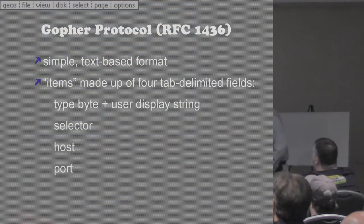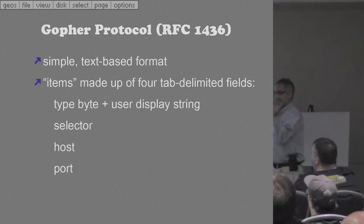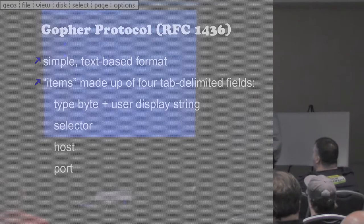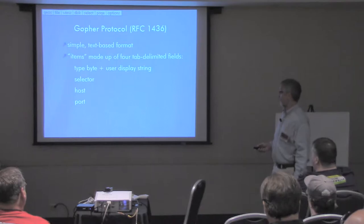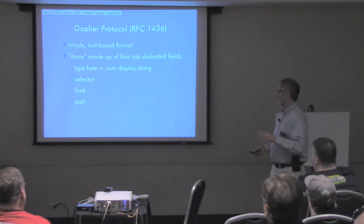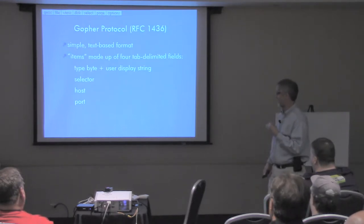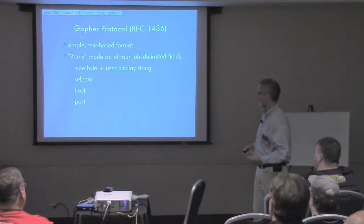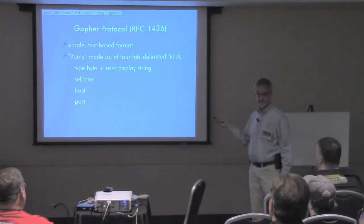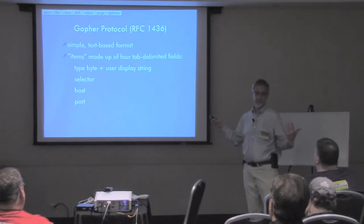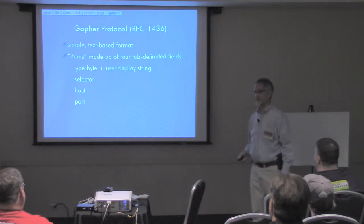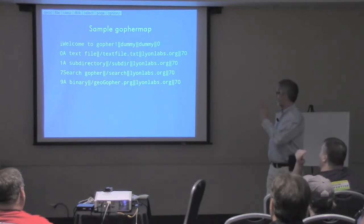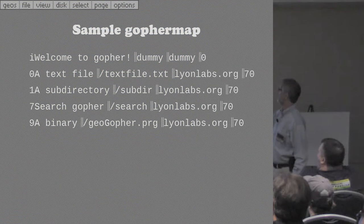A little bit about Gopher protocol: it's very, very simple. It sends lines of text over the wire, and each line is either something to display or something you can click on to get a result. There are four fields in every Gopher item: the first tells you the type plus a display string; then there's the selector, which is like a link — what you send to the server to tell it what you want; and then a host and port.